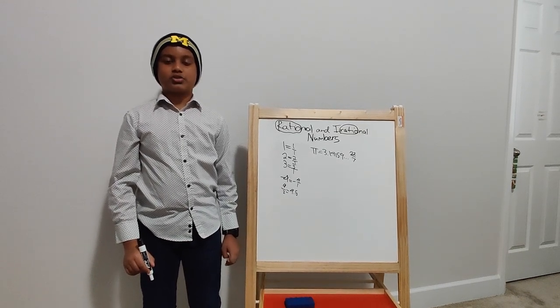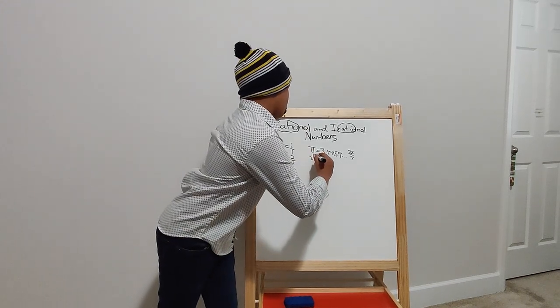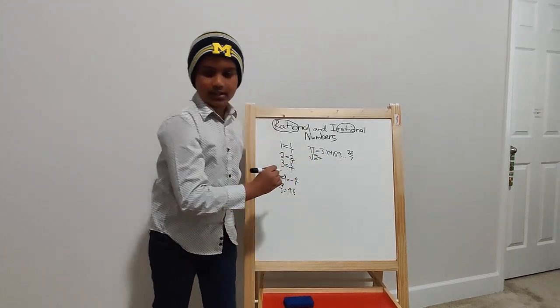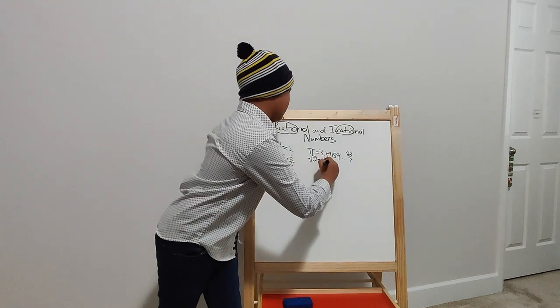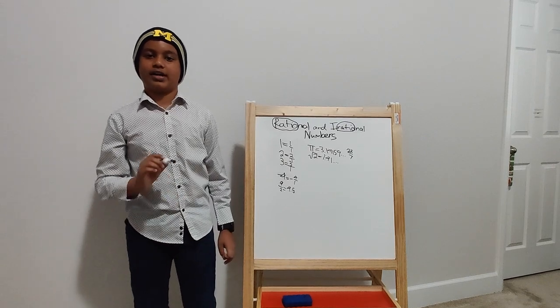Some square roots can also be an example of an irrational number. Square root of 2 equals 1.41 etc. and continues on forever and ever.